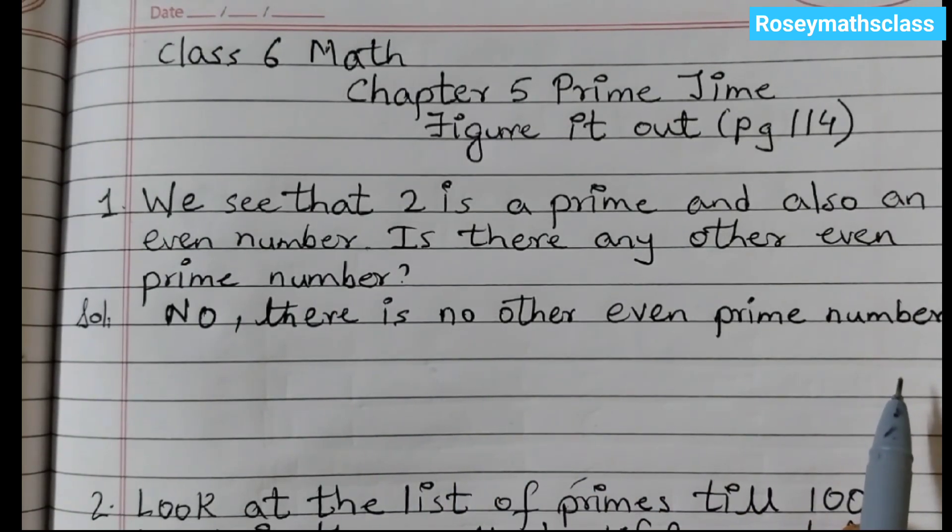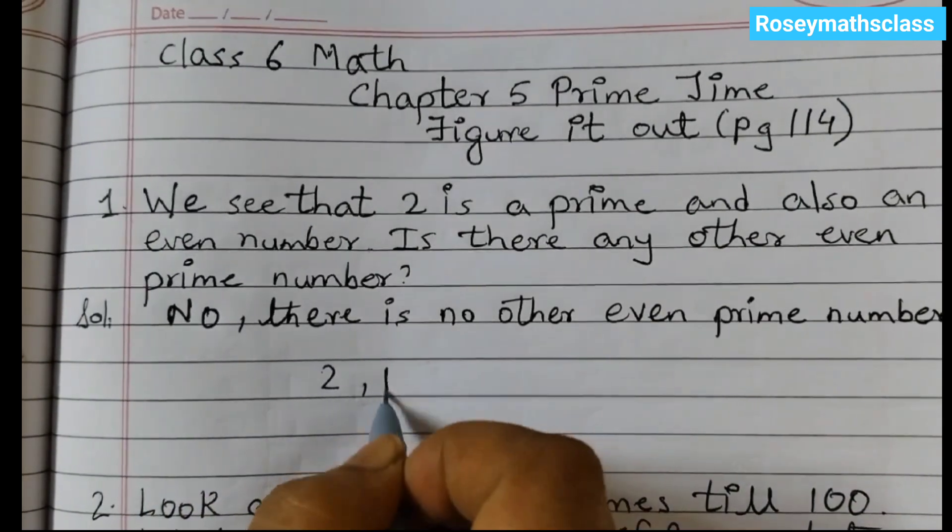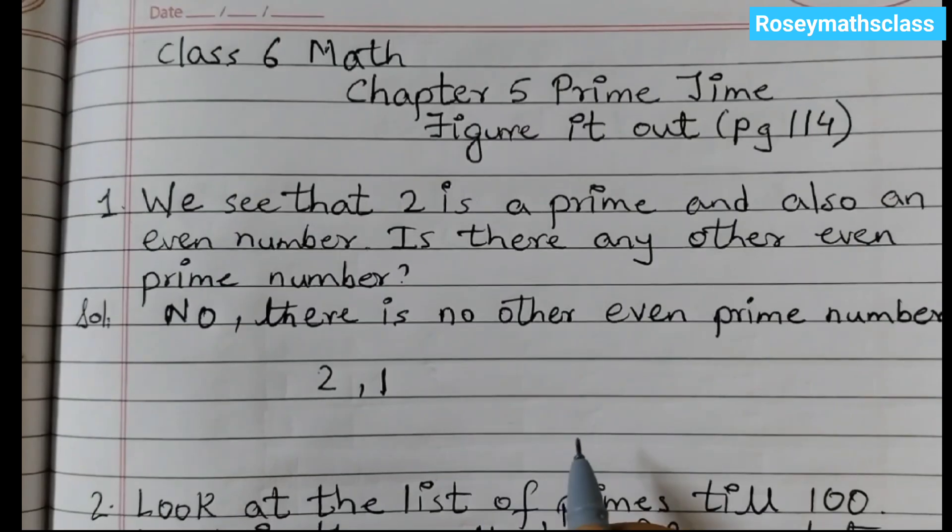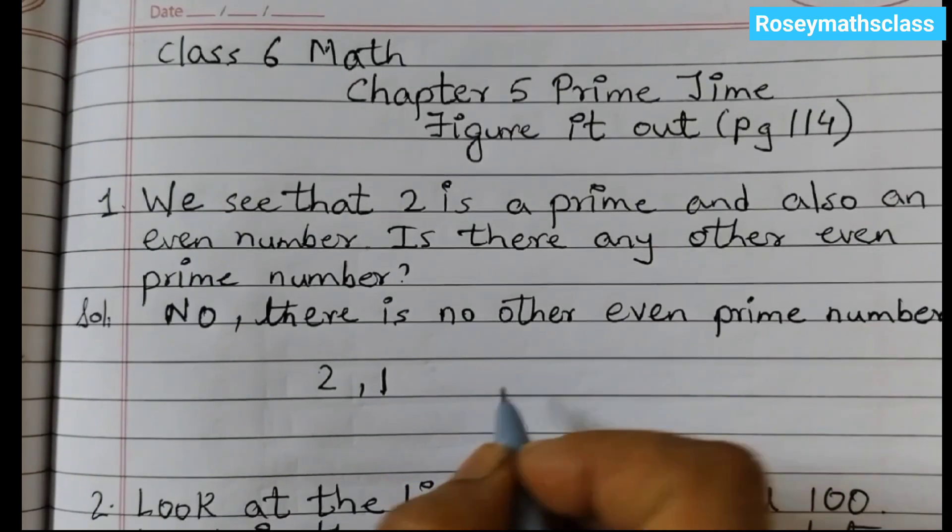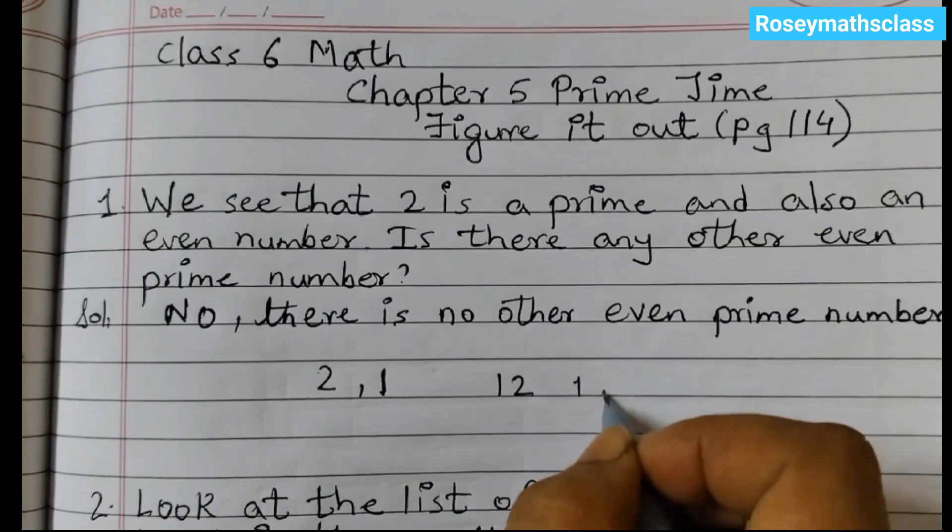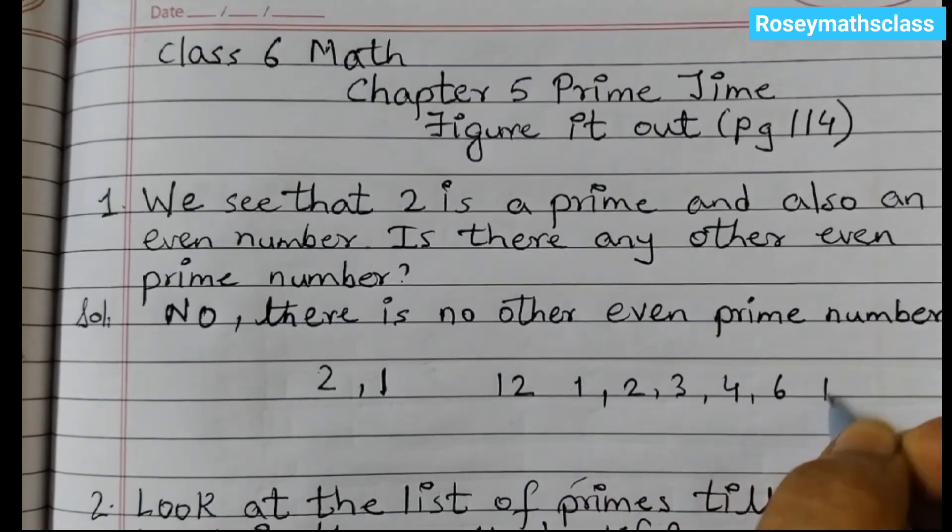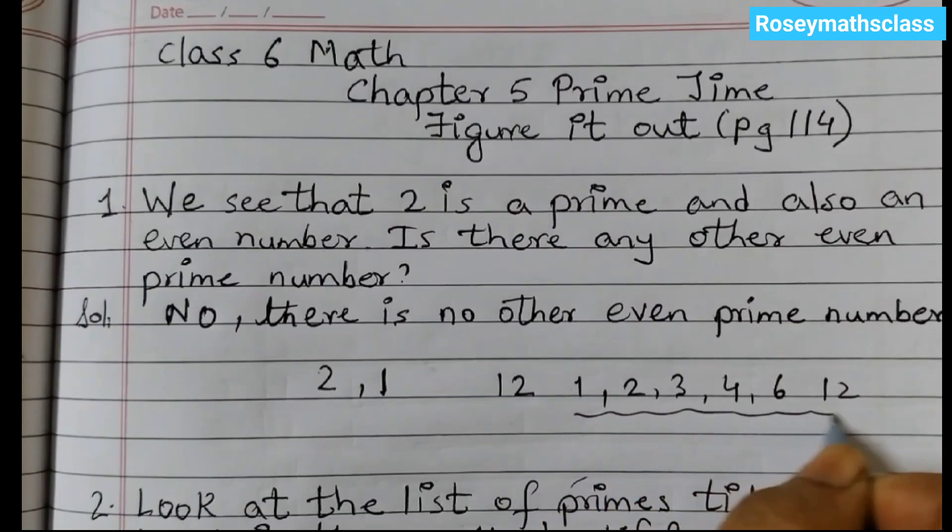2 is the only even prime number because it has only two factors, 2 and 1. If I take any other number, say for example 12, I will have 1, 2, 3, 4, 6, 12. So many numbers, right?